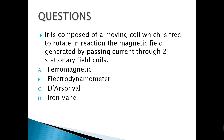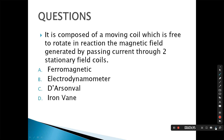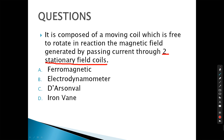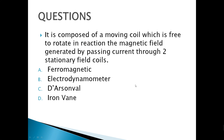Next, it is composed of a moving coil which is free to rotate in reaction to the magnetic field generated by passing currents through two stationary field coils. The key phrase is 'two stationary field coils,' and the correct answer is letter B — electrodynamometer.